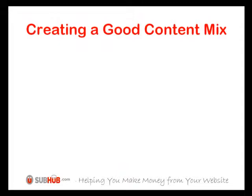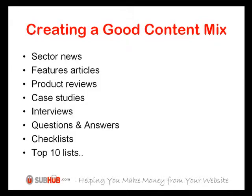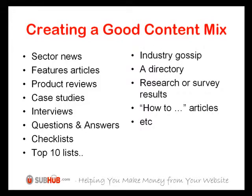Many content websites have just one type of content — often comments on industry news, lengthier feature articles, or product reviews — and for some this works well. However, many of the most successful online websites learn from offline magazines and create an exciting and varied mix, which could include case studies, interviews, Q&As, checklists, top ten lists, industry gossip, a directory, research or survey results, how-to articles, and more. A good mix of content is interesting to produce and for your visitors to read.